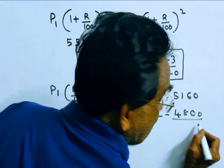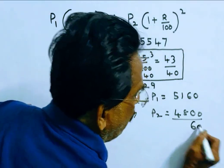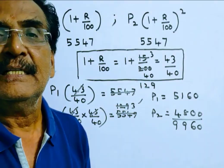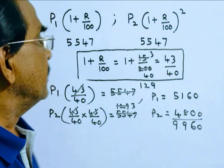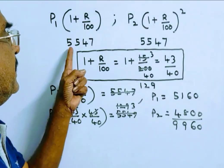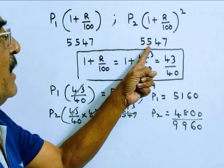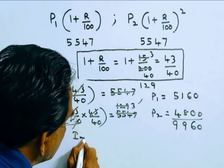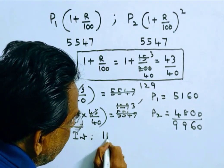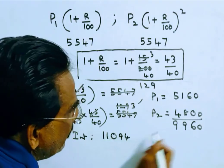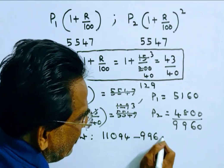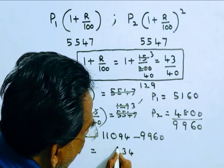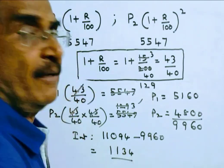So the total sum borrowed, P1 plus P2, is equal to 9,960. Now we want the interest paid by Surekha. Surekha has paid a total of 11,094. As against the principal of 9,960, so the interest paid by Surekha is 1,134.